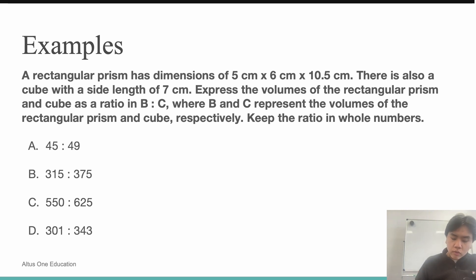The volume of the rectangular prism is length x width x height. So, 5 x 6 x 10.5 is equal to 315 cm². The cube has a side length of 7 cm. Now, a cube is like a square, but 3D, and it has equal side length. So, length x width x height, 7 x 7 x 7 equals 343 cm².